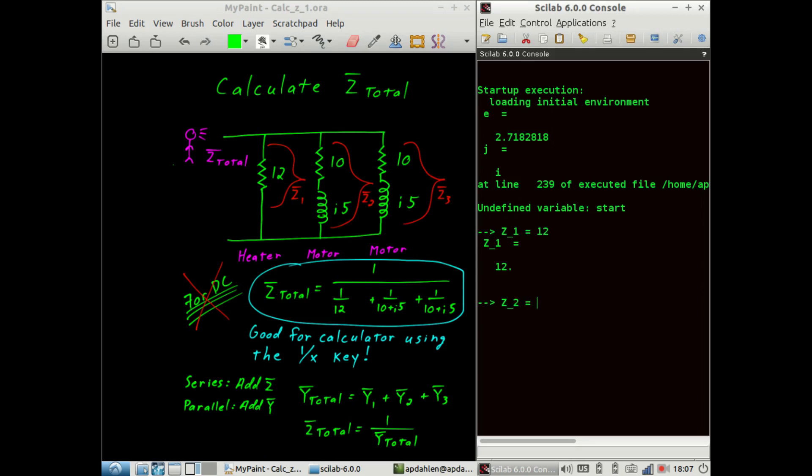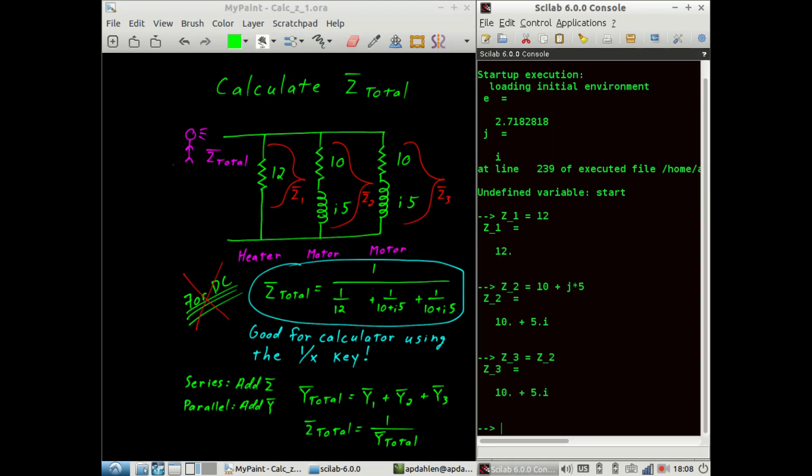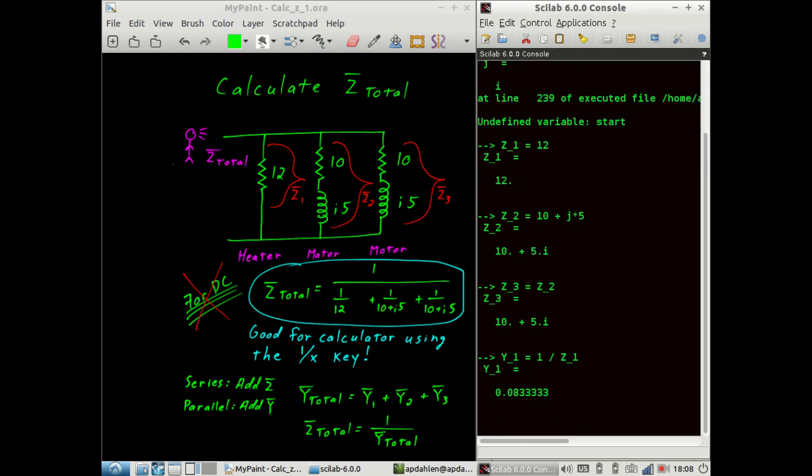Once we have that, we can then enter our individual impedances. So Z1 is 12 ohms, impedance 2 is 10 plus J times 5, and Z3 is just equal to Z2. Next we calculate the admittances. So admittance 1 is equal to 1 over Z1, admittance 2 is equal to 1 over Z2, and admittance 3 is equal to 1 over Z3.